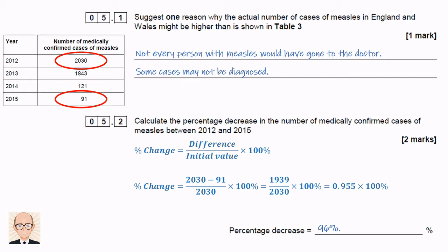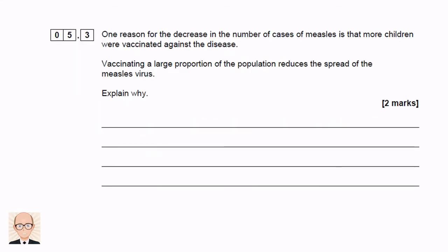That's a huge reduction — over 2,000 cases down to less than 100 in just four years. The next question suggests the reason for this dramatic decrease was that more children were vaccinated against measles.